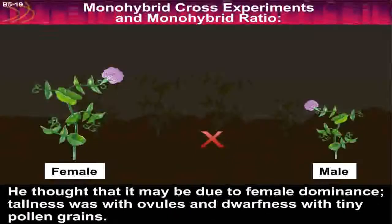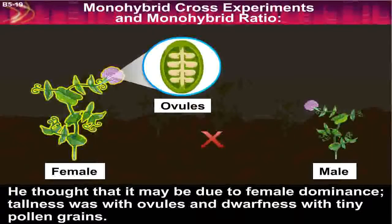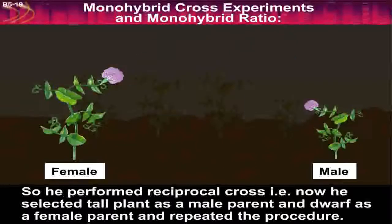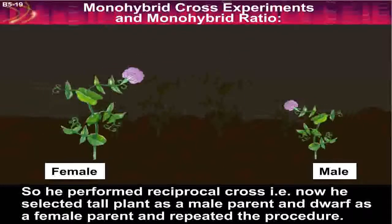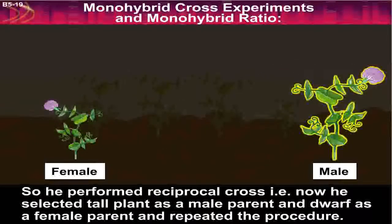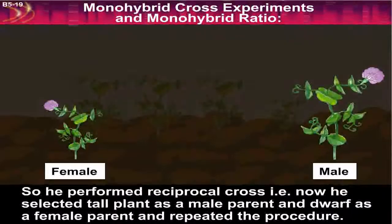He thought that it must be due to female dominance — that tallness was associated with ovules and dwarfness with tiny pollen grains. So he performed a reciprocal cross; that is, he selected a tall plant as the male parent and a dwarf as the female parent and repeated the procedure.